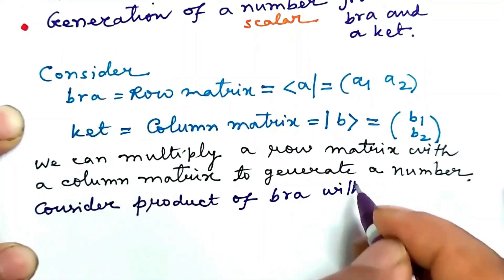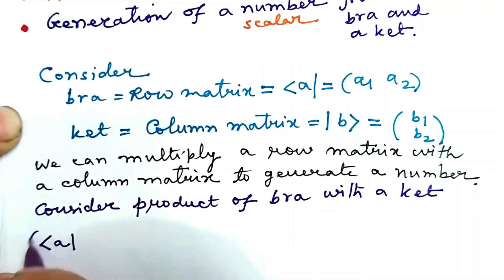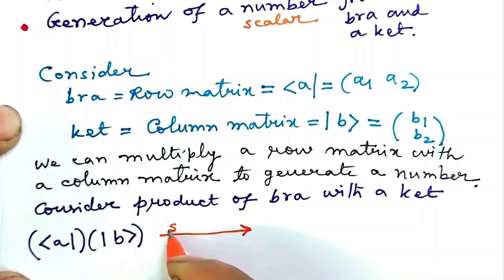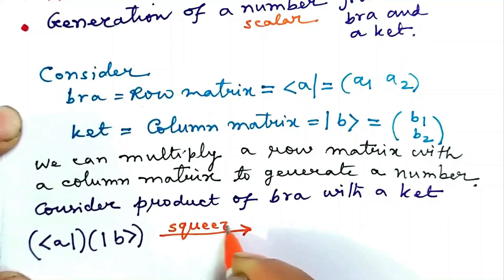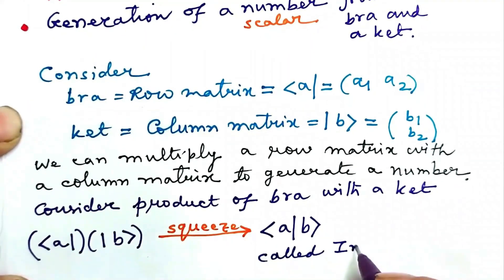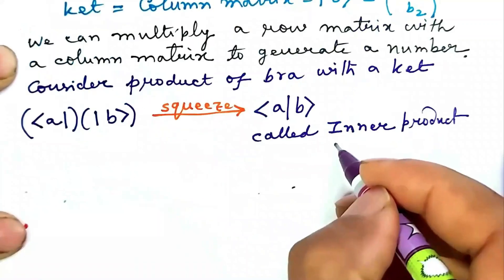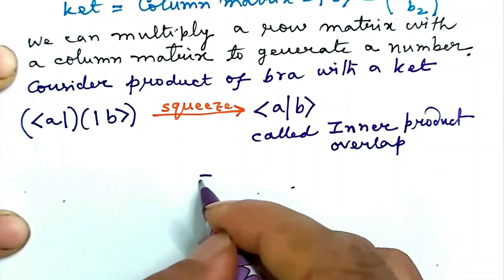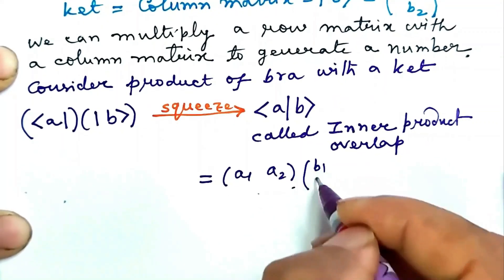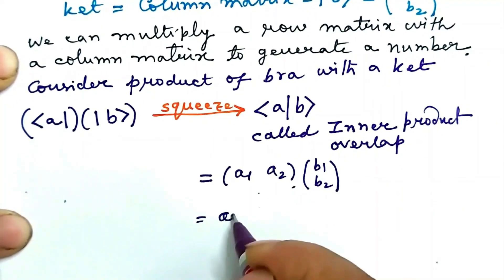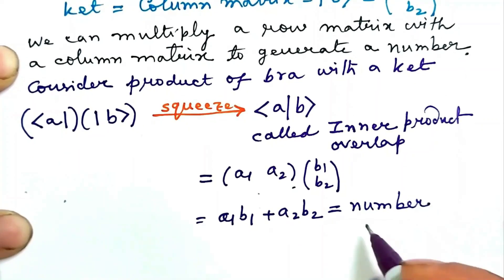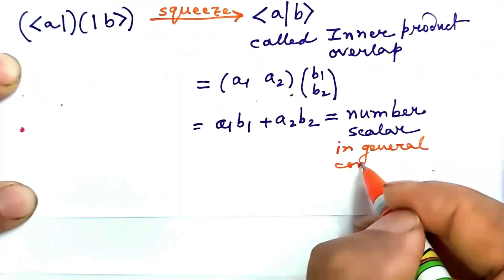Consider the product of bra with a ket: first write the bra and then write the ket, squeeze the two inner vertical bars into one — and this is how we write 'bra A ket B,' called inner product or overlap. So it is the product of row (a1, a2) with column (b1, b2), which generates a1·b1 plus a2·b2, which is a number or scalar — in general, complex.